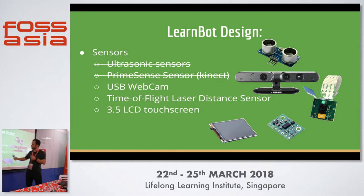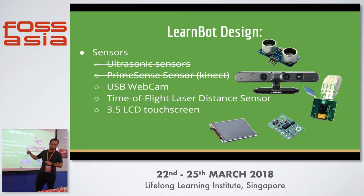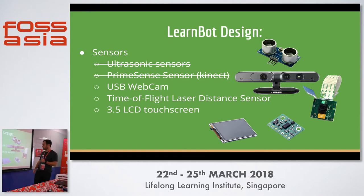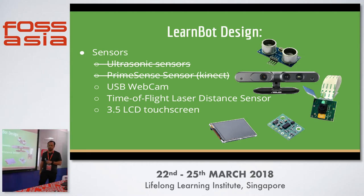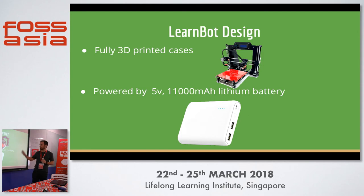For sensors: we removed the ultrasonic sensors and the PrimeSense because of the price. Now we have a Raspberry Pi webcam — it used to be a USB webcam, but now it's the actual Pi camera. In the real version, we have laser distance sensors so it can avoid obstacles. We also added a 3.5-inch LCD touchscreen to the robot — we use it as a face for the robot so it can express different emotions. All the pieces are fully 3D printed and modeled in 3D; you can find the models on the website so anyone can download and print them at home.